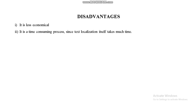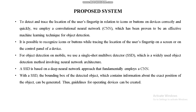Disadvantages of existing systems include being less economical and time-consuming, since text localization itself takes much more time. In our proposed system we employ a convolutional neural network (CNN), and it has the ability to locate the user's fingertip in relation to icons or buttons on devices correctly and quickly.